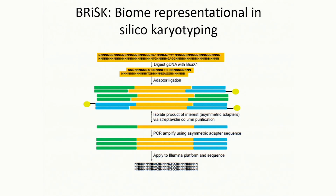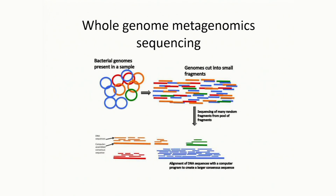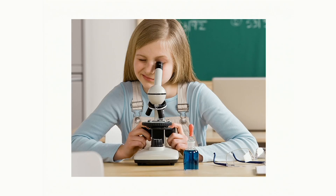BRISK is becoming less useful as whole genome amplification has become more affordable, but we still use it. I'll show an example where it found something whole genome didn't see. Whole genome sequencing is basically fractionating the DNA, sequencing it all, and running it through Kraken or another metagenomic pipeline. It's almost like having a new microscope. Let me show you five little vignettes of what we've learned with these techniques.